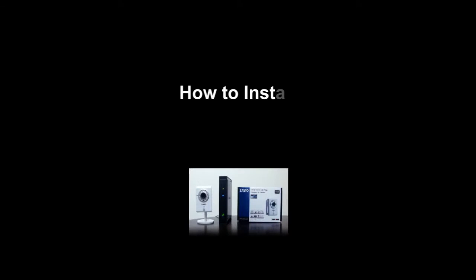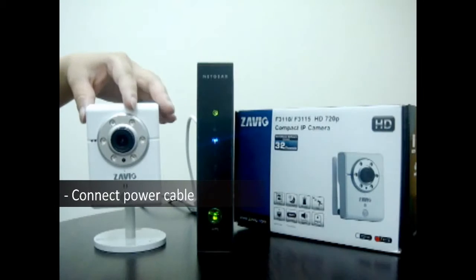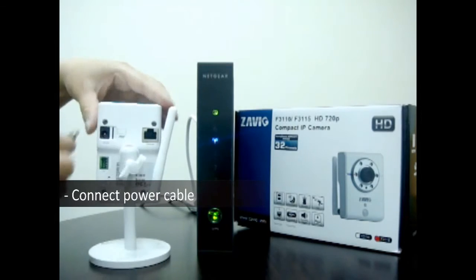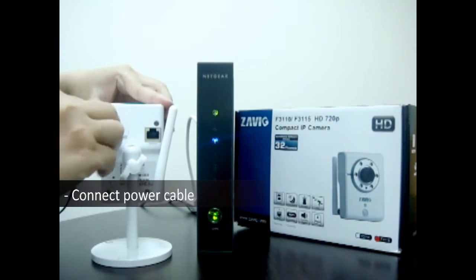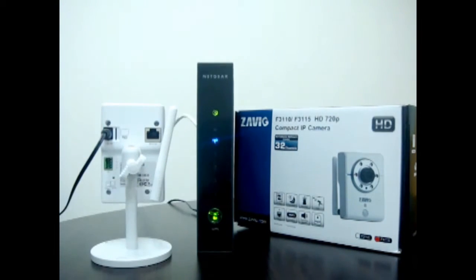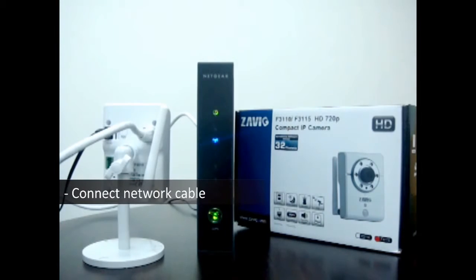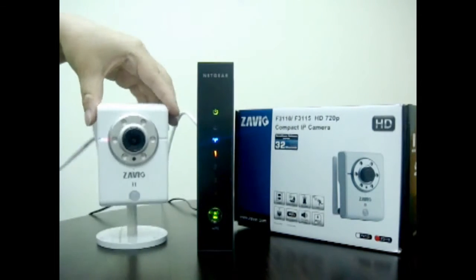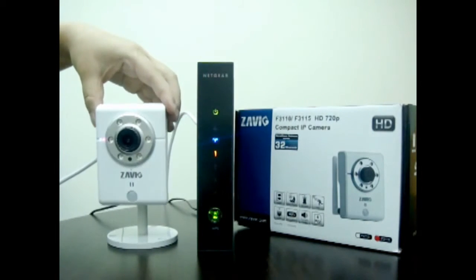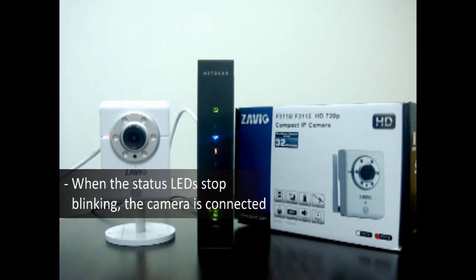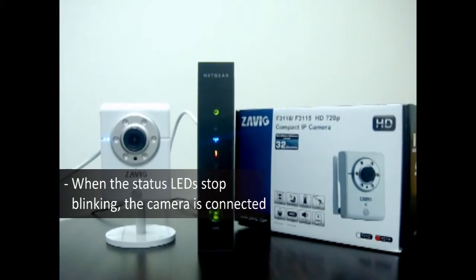How to install wired connection: Connect power cable. Connect network cable. When the status LED starts blinking, the camera is connected.